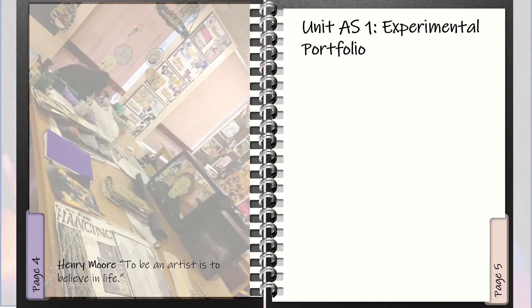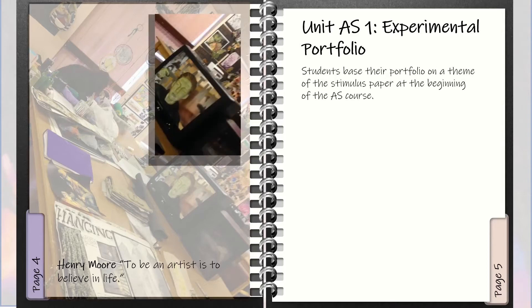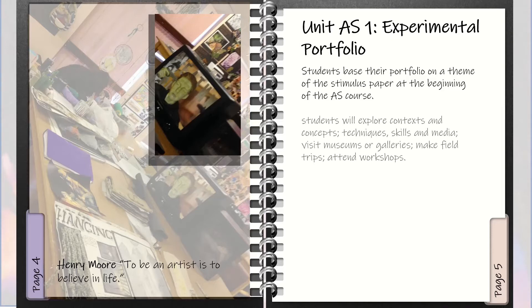The first unit that students undertake at A-Level Art and Design is the Experimental Portfolio. Students base their portfolio on a theme from the stimulus paper at the beginning of the A-Level Art and Design course. Students will explore context and concepts, techniques, skills and media.